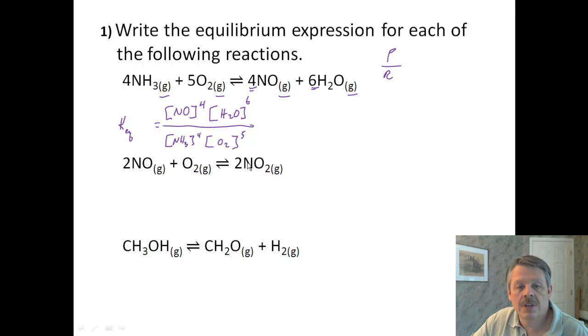Again, look at the second one. You'll notice they're all gases. So we start with NO2, which is our only product, and it's raised to the 2nd power, it's squared because of the 2 there. And we have the concentration of NO, which is squared, times the concentration of O2, which is not squared because there is no coefficient in front of the O2. This is our equilibrium constant.